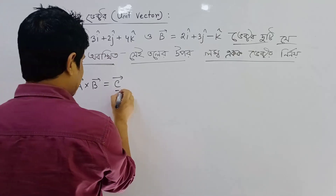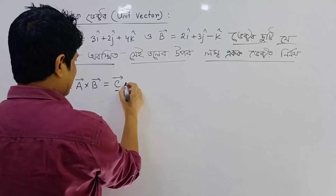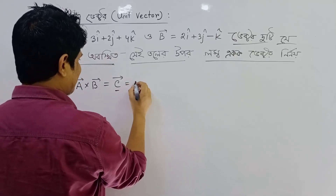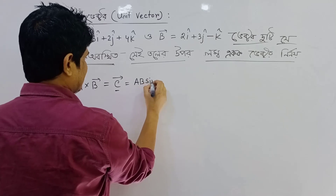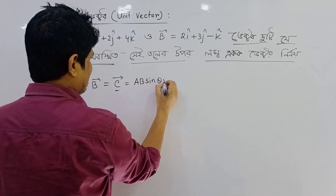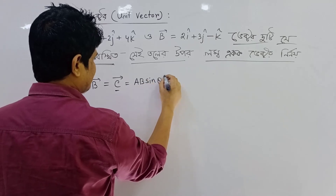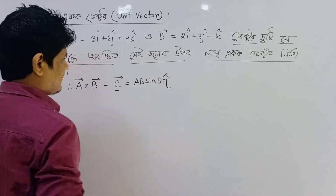If we find the vector, it will be C — vectors A and B — with sin theta. The formula involves A cross B equals ab sin theta eta.